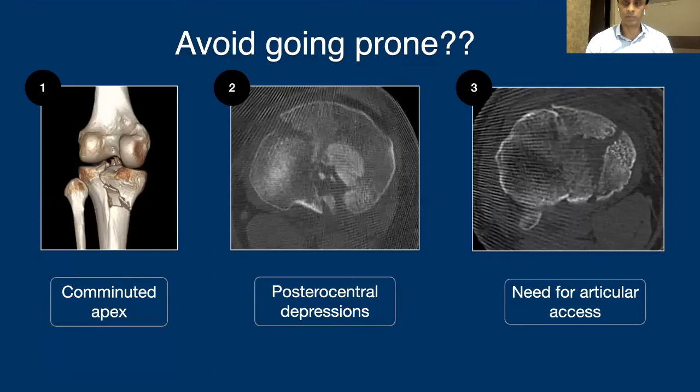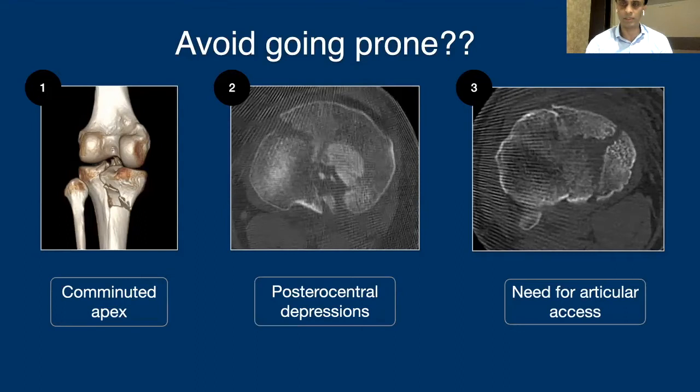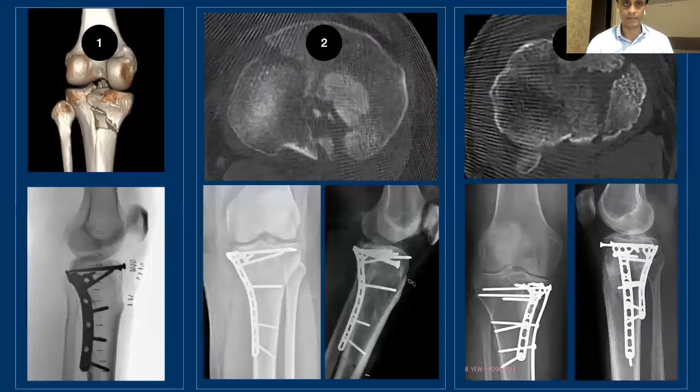So when should we avoid going prone? Since most of these fractures are done in supine position, you need to know when to avoid prone. My indications for not going prone include: when you have a comminuted apex, when you have postcentral depressions as part of fracture dislocation patterns, and in fractures where you need articular access. For example, if you have the medial column fractured as well, then you do not have a good reference to base your posteromedial fragment upon. Those are my indications to definitely go supine on the posteromedial side.